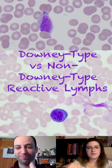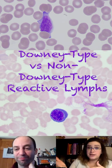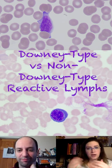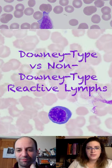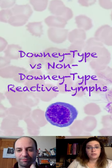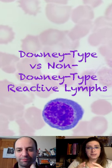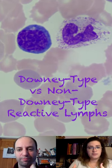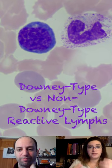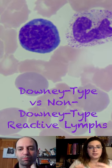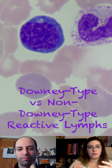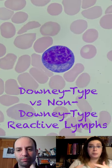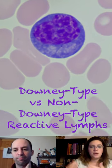Downey-type reactive lymphocytes versus non-Downey-type reactive lymphocytes. Non-Downey-type reactive lymphocytes are generally small and condensed. However, the cytoplasm is deeply basophilic. The nucleus is very condensed, and you may see prominent white striations, developing very plasmacytoid characteristics.